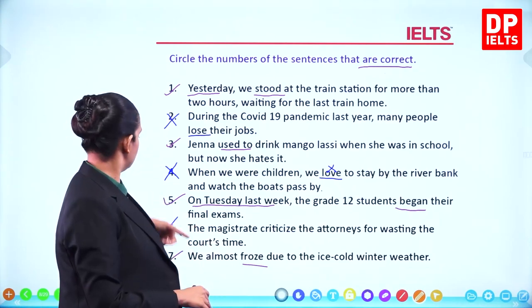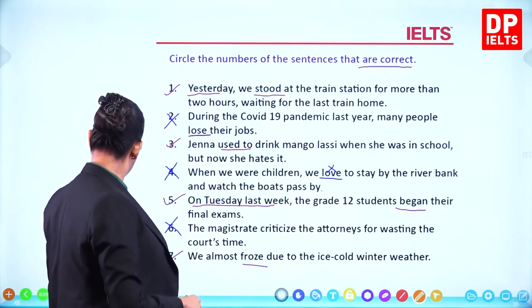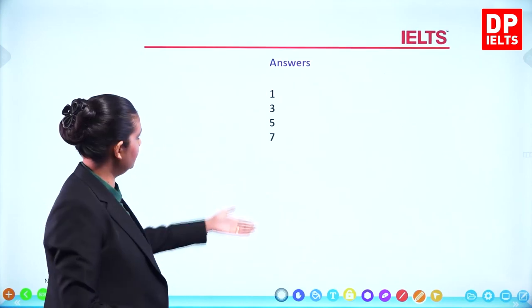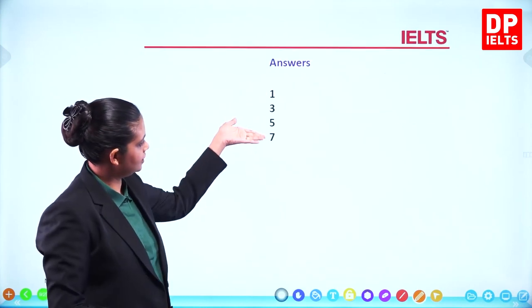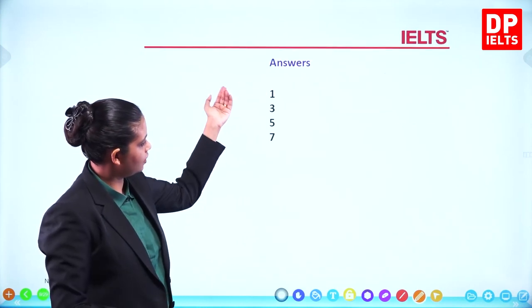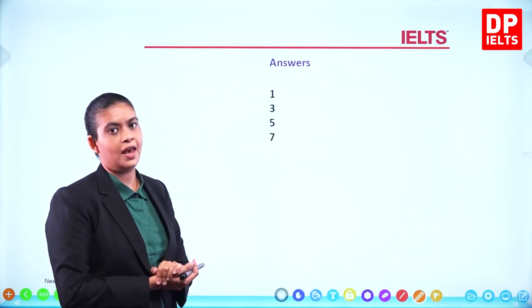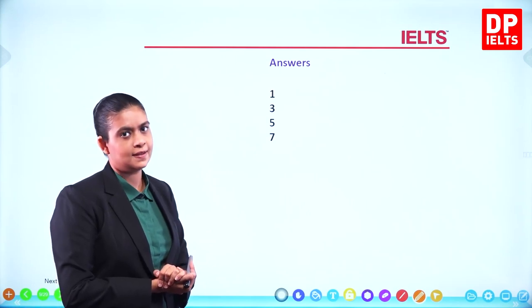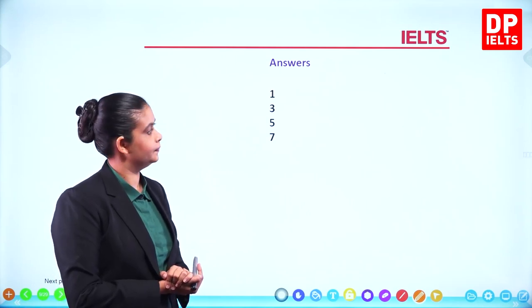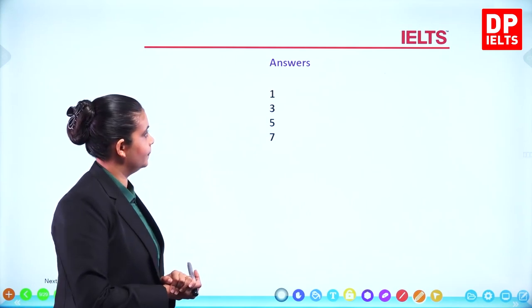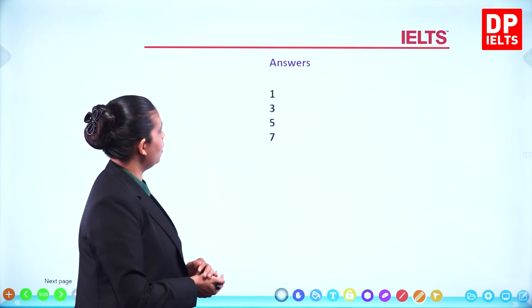So the correct answers are sentences one, three, five, and seven.